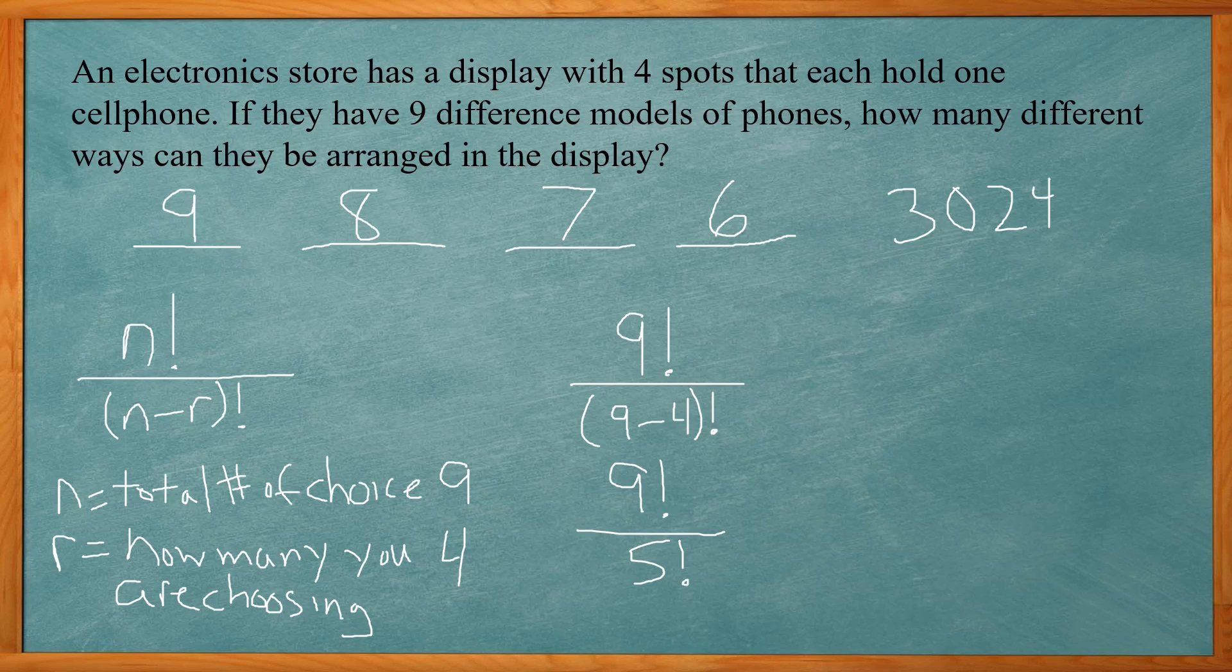Now you can put this in your calculator under your probability section on the calculator. You probably have an exclamation point for the factorial.